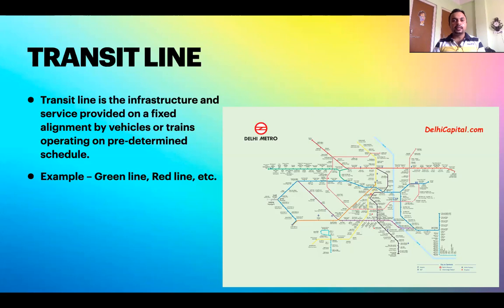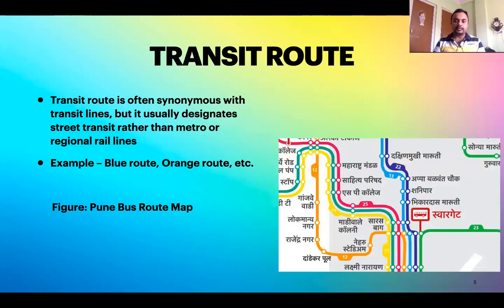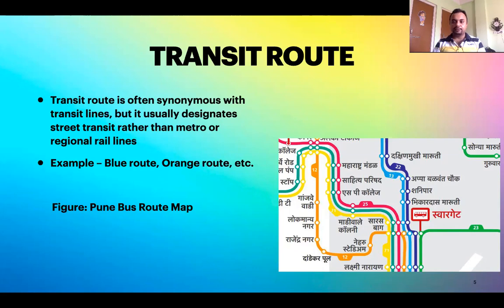What is a transit route? The same thing, when designated for buses, is called the transit route. It is also synonymously used with transit lines — sometimes someone may refer to a metro line as a transit route, so do not get confused. Transit line is specifically for trains and transit route is for buses. There is also a transit route map of bus services in Pune shown here, where you can see how transit routes of various lines are shown in different colors.